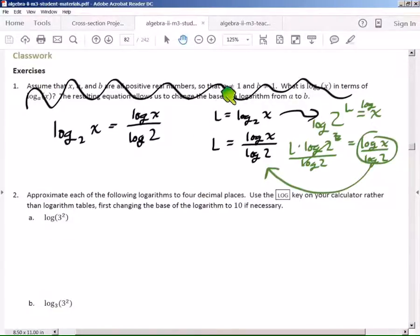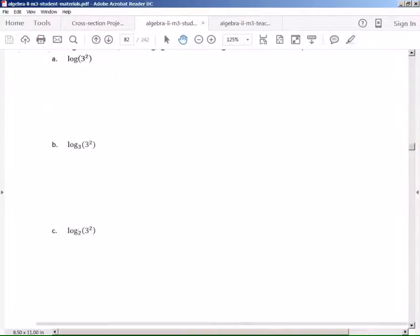Whenever you have this, you can rewrite it as this ratio. This ratio is called the change of base ratio. So let's look at an example. We'll just do one example right here on b. So for this problem, if we wanted to rewrite this using the change of base ratio,